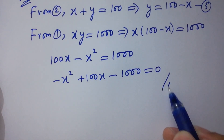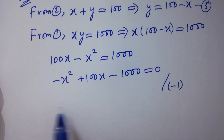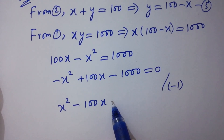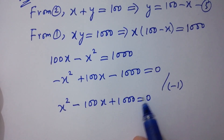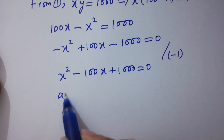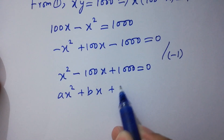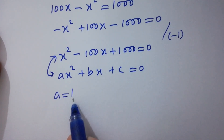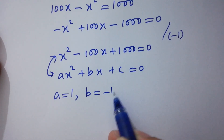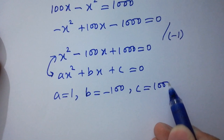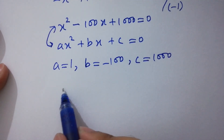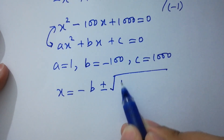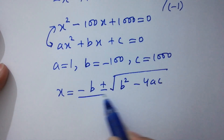Dividing by minus 1 on both sides gives x squared minus 100x plus 1000 equals 0. This is a quadratic equation with a equals 1, b equals minus 100, and c equals 1000. Applying the quadratic formula: x equals minus b plus or minus square root of (b squared minus 4ac) over 2a.